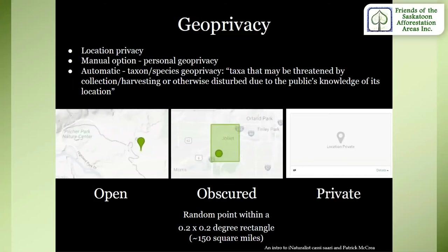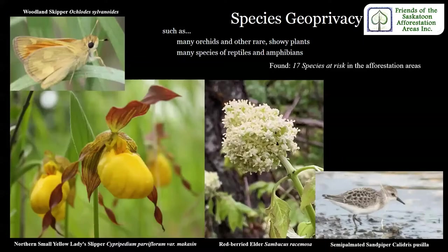Open gives a pinpoint right down to the latitude and longitude. Obscured gives a general area in the province. And private — no one knows at all. So if you were taking a picture of your pollinator garden in your front yard and you didn't want people to know exactly where it was, you could set it to private. Right now there are 17 species at risk found in the afforestation areas. The afforestation areas are a unique ecotone between boreal forest-like settings with mixed woodlands and native moist mixed grasslands, so species at risk need habitat from both of these settings.